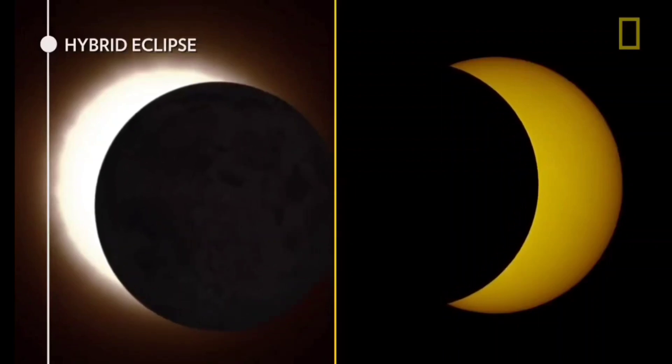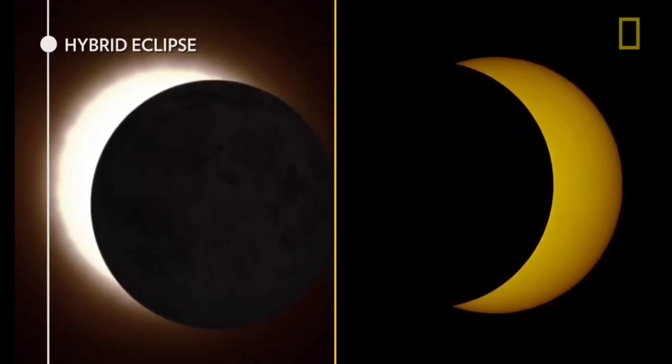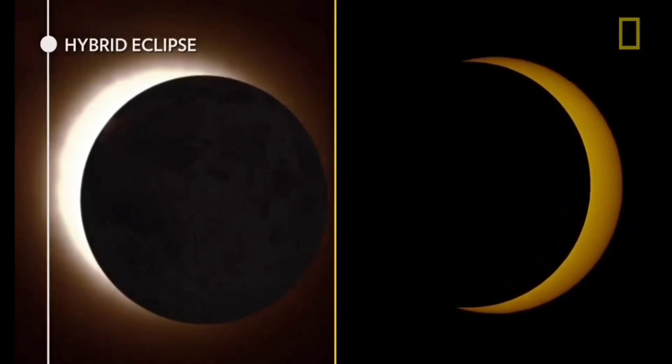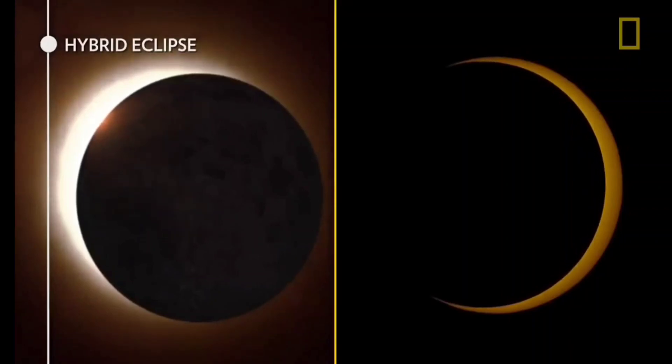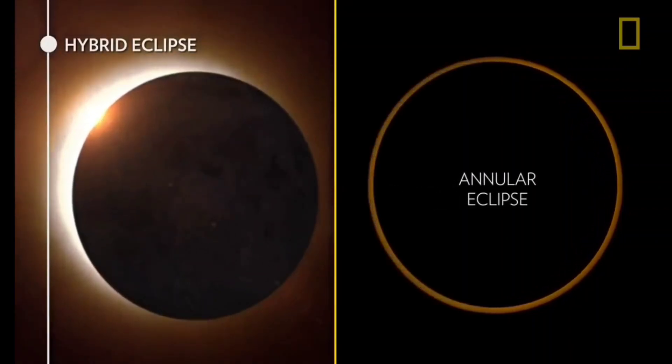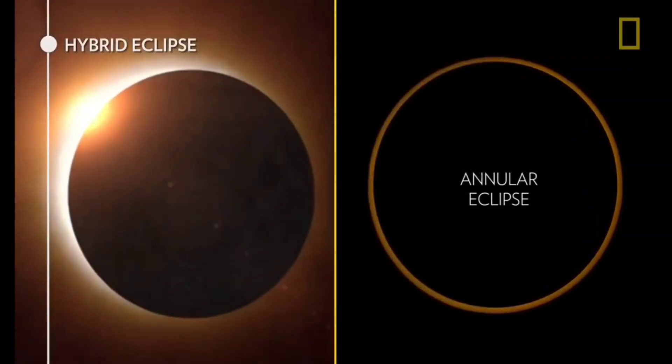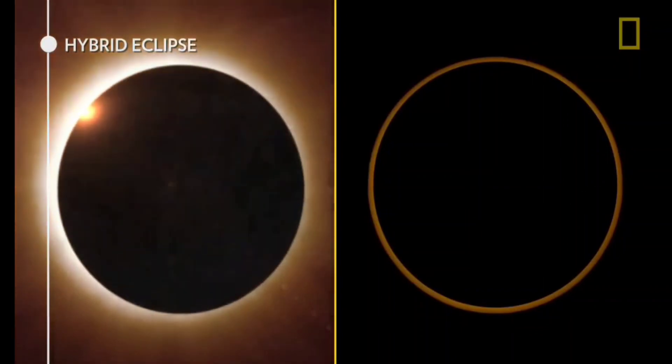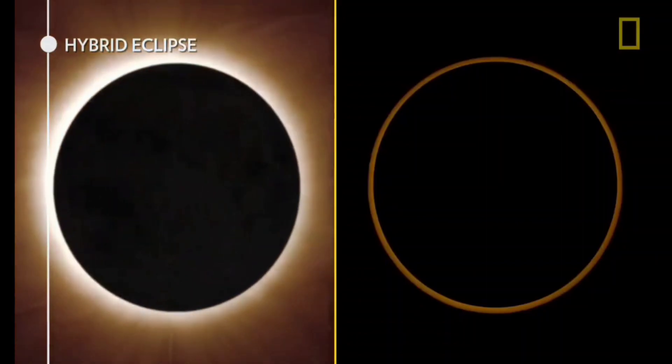The darkest part of its shadow that creates a total solar eclipse, while other areas remain outside the umbra region causing an annular eclipse. This is nothing but the same eclipse changing from an annular to a total solar eclipse.